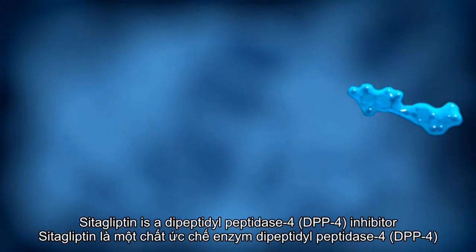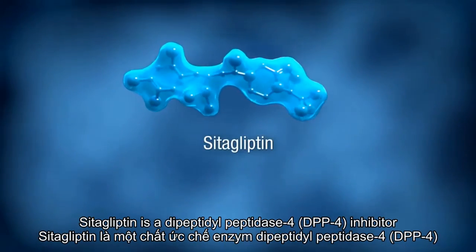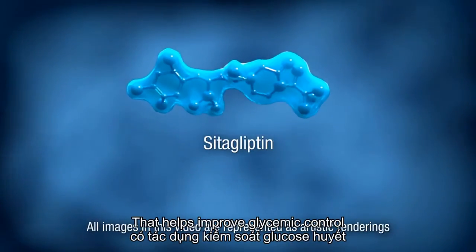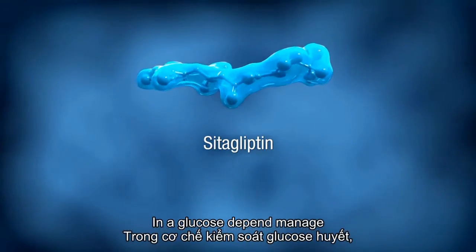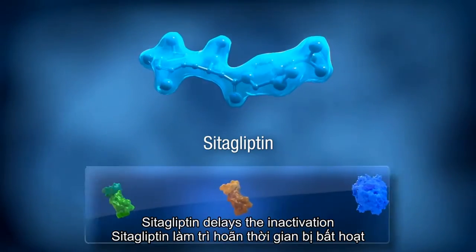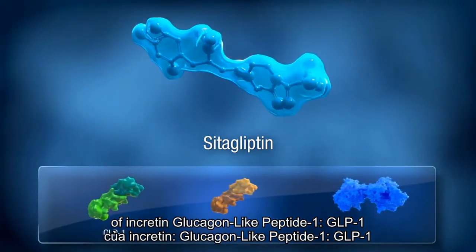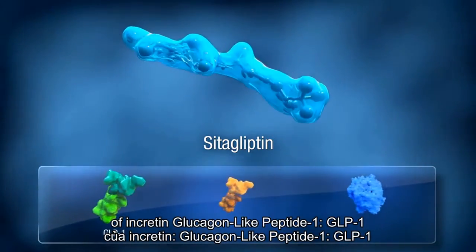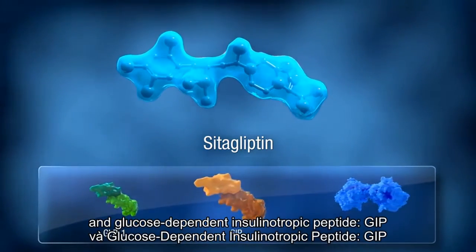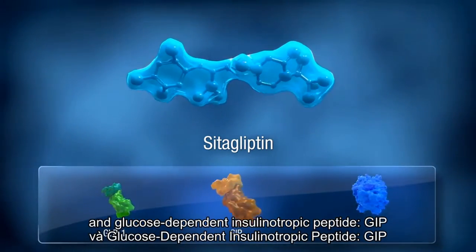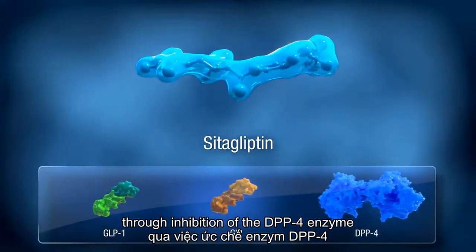Sitagliptin is a dipeptidyl peptidase 4 (DPP4) inhibitor that helps improve glycemic control in a glucose-dependent manner. Sitagliptin delays the inactivation of the incretins glucagon-like peptide 1 (GLP-1) and glucose-dependent insulinotropic peptide (GIP) through inhibition of the DPP4 enzyme.